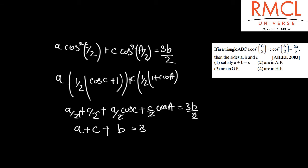And that is equal to 3B. So we can say that A + C is equal to 2B. If A + C is equal to 2B, then we can say that A, B, C are in AP. So option 2 is the correct option.